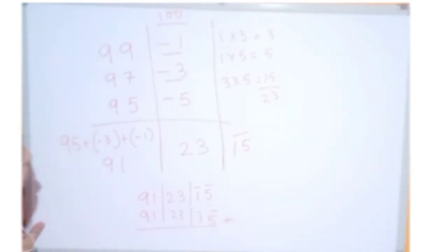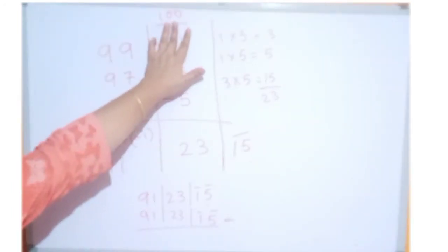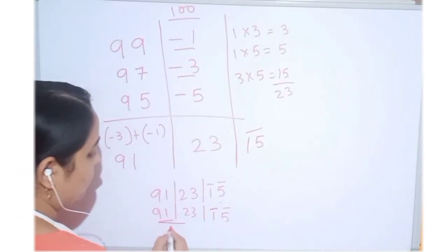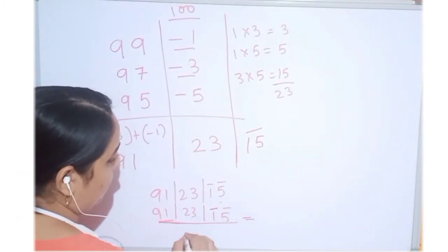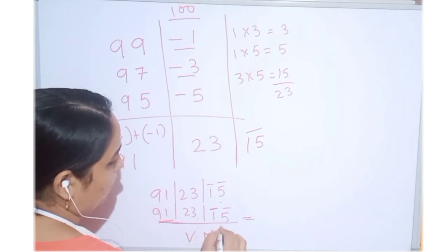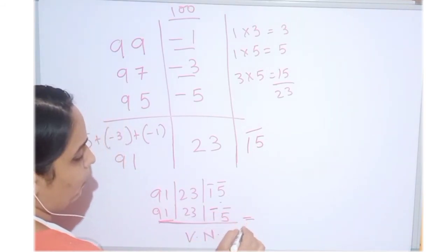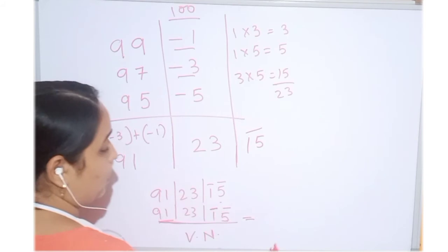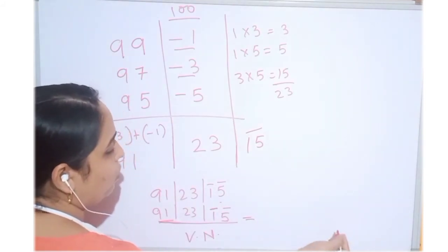We have to convert this to normal number. Now, why we are taking this 2? Because the base is 100. So, we can take 2 digits at 1. We convert this to a normal number. This is the vinculum number we got because 1 bar and 5 bar is there.